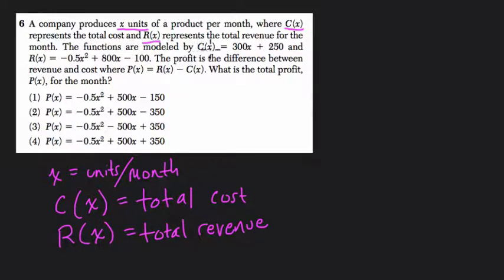The functions are modeled by c of x equals 300x plus 250, and r of x equals negative 0.5x squared plus 800x minus 100. The profit is the difference between the revenue and cost. So basically profit p of x, the profit based on the units. And this makes sense. Think about it. It's the revenue you're making based on x minus the cost of making those objects.